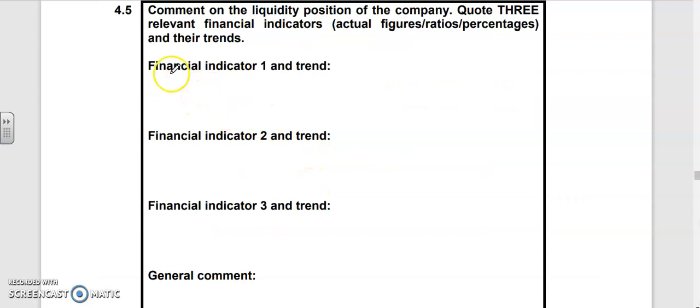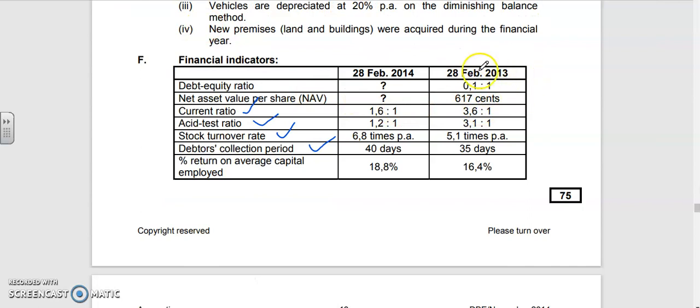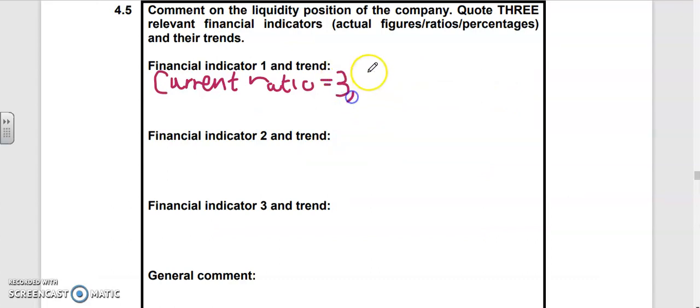Financial indicator one: current ratio. The trend - it changed from last year 2013, 3.6 is to 1, to 1.6 is to 1. You can say it decreased.